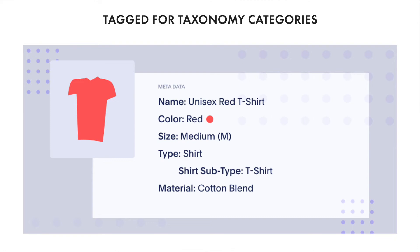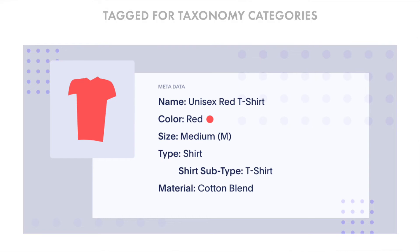These characteristics, once defined for each item, help to populate the taxonomy structure and organize the data. Based on this metadata, we would expect to find this item in the t-shirt section, organized with other medium-sized shirts. And depending on our taxonomy structure, this may also be organized by material or color.